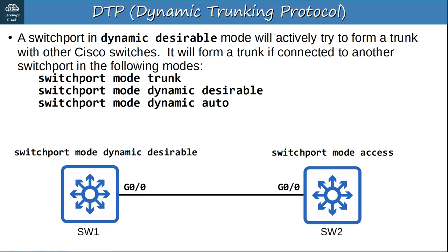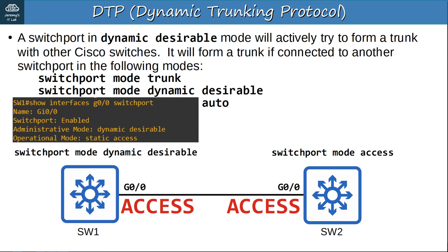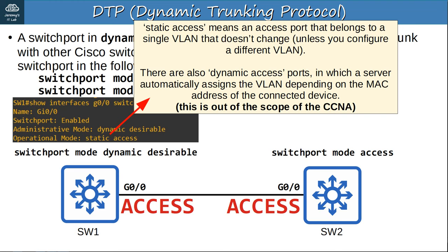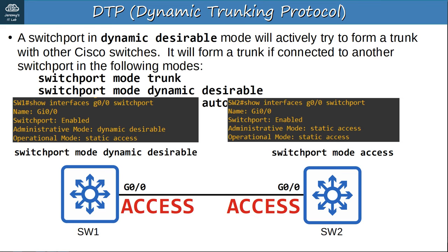If SW2's interface is manually configured as an access port, SW1 is actively trying to form a trunk but the trunk will not form, and both will operate as access ports in the default VLAN, VLAN 1. The operational mode becomes static access, meaning an access port that belongs to a single VLAN that doesn't change unless you configure a different VLAN. Both SW1 and SW2 show administrative and operational modes of static access.